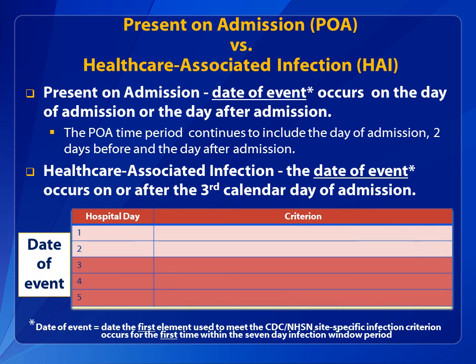Differentiating between an infection POA versus HAI is determined by the date of event. The POA time period continues to include the day of admission and two days before and the day after admission. However, the POA date of event will never be earlier than the day of admission. If the date of event occurs on the day of admission or the day after admission, then the event is POA. If the date of event occurs on or after the third day of admission, then the event is an HAI.